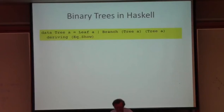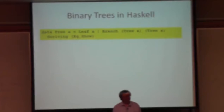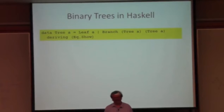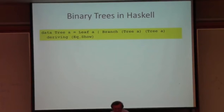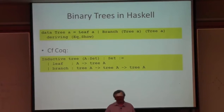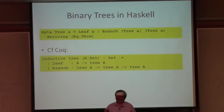For those of you who have never used Haskell, here is an example of a data type definition. This defines the type of binary trees. A tree containing leaves of type A is either a leaf or a branch. If it's a leaf, it contains a component that is an A. If it's a branch, it has a left and a right subtree, which are also trees. I believe this is the corresponding type definition in Coq, defining a tree of A's with two constructors, leaf and branch, with the same types in both Haskell and Coq.